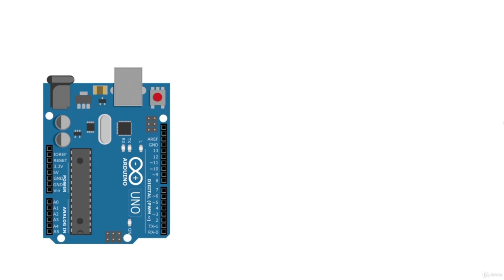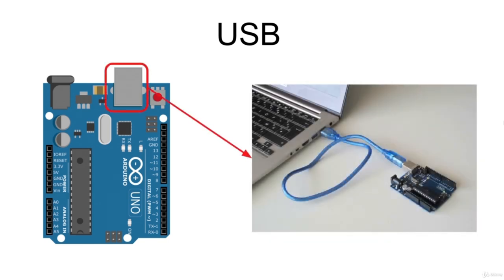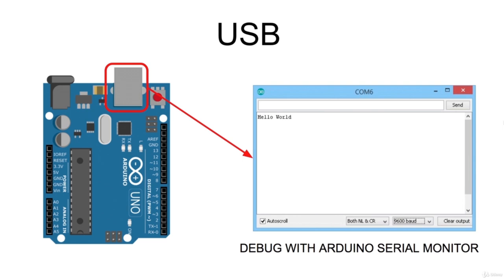The USB cable is used to connect with your computer. Through the USB port, the Arduino can be powered and can receive the code that will be stored in the internal memory of the microcontroller and executed. This port can also be used during program execution for exchanging information with your laptop using the Arduino serial monitor in order to check that your code is properly working. This checking operation is known as debug.